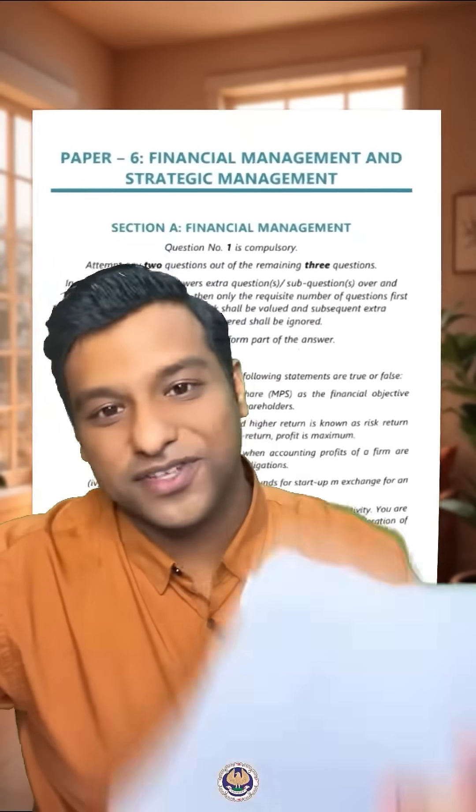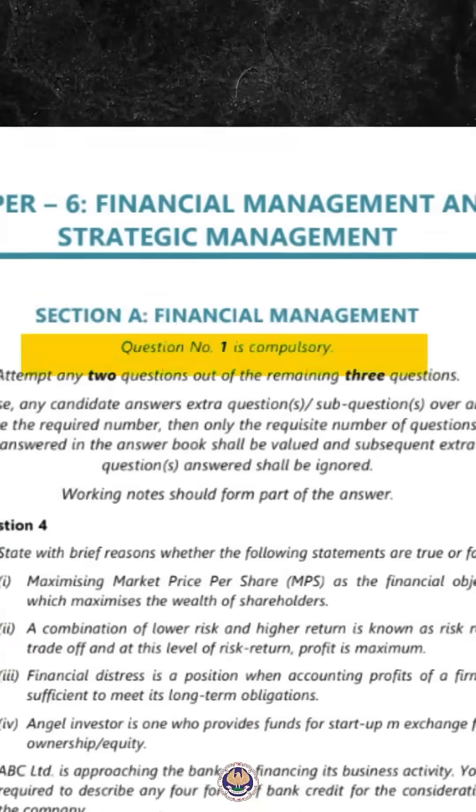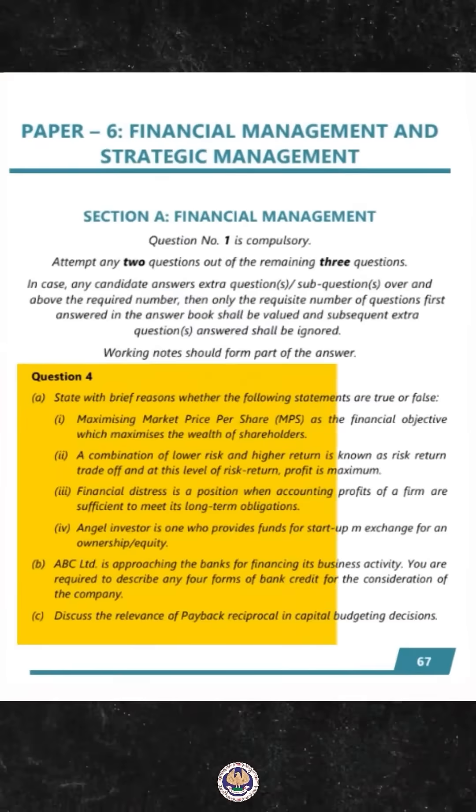In recent CA intermediate examinations, the FM paper has about 8 to 12 marks of theory questions. And let's be honest, most of us ignore the theory part of the FM subject till the very very end, correct? Give me 50 seconds and let me discuss one by one all important theory questions that might come in your examinations.